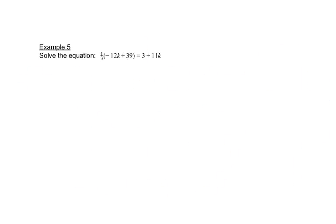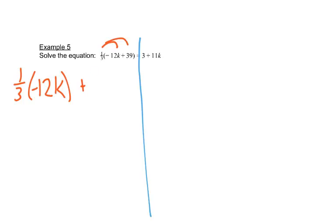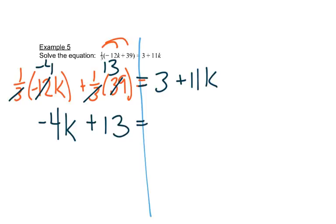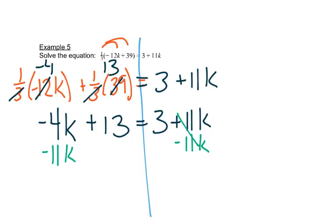One more example. We'll draw our line straight down. Again we have a parenthesis that we need to get rid of, so I need to take 1/3 times negative 12k, plus 1/3 times 39. On the right-hand side we still have 3 plus 11k. You can do this in your calculator, or just see that 3 into negative 12 is negative 4, giving negative 4k. And 3 into 39 is 13, so I have negative 4k plus 13 equals 3 plus 11k. Moving k's to the left: subtract 11k, so negative 4 minus 11 is negative 15k.